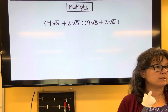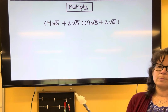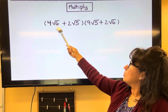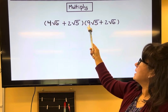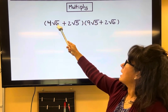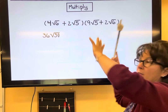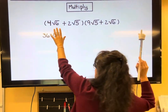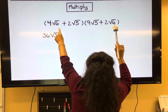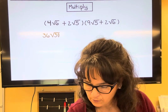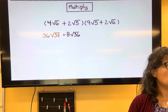This next example has a bit more simplifying involved. Using FOIL on (4√6 + 2√5)(9√5 + √6): First terms — 4 times 9 is 36, and root six times root five is root 30. Outer terms — 4 times one is 4, wait — four times... root six times root six is root 36, so we have plus 8 root 36.